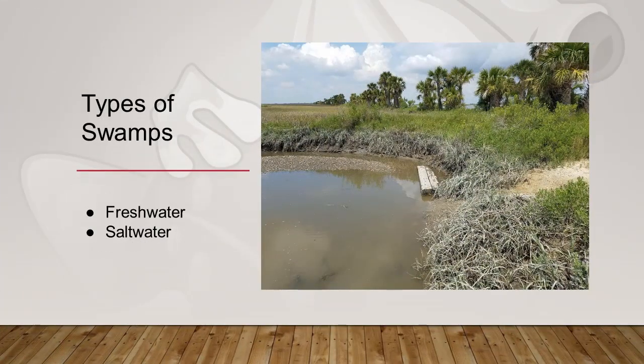There are two types of swamps we're going to talk about: freshwater swamps and saltwater swamps. However, sometimes swamps are named for the type of vegetation that grows in them, like cypress swamps or hardwood swamps. You may hear these terms in your studies, but in general swamps are transition areas that are not totally land or water.